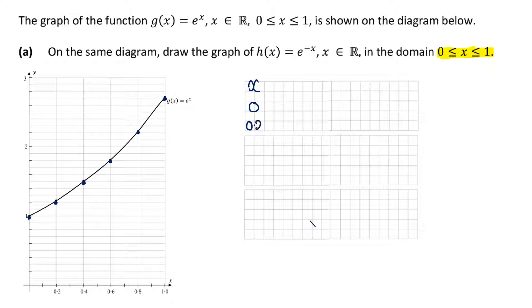We're going to use the same values: 0, 0.2, 0.4, 0.6, 0.8, and 1. We're going to substitute that into the function h(x) = e^(-x). This will give us e^(-0), e^(-0.2), e^(-0.4), e^(-0.6), e^(-0.8), and e^(-1). That is the function we're looking at.